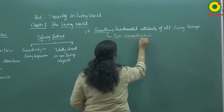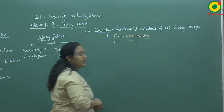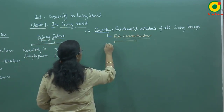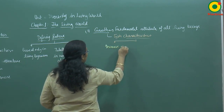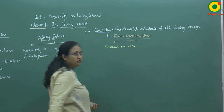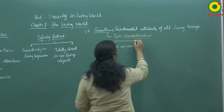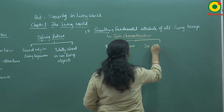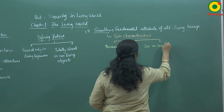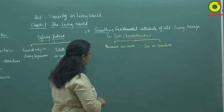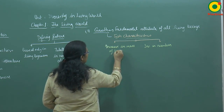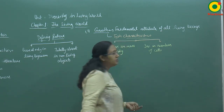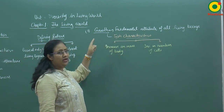What are those twin characteristics? First, increase in mass of the body. And the second one is increase in number of cells. These are the twin characteristics exhibited by growth.